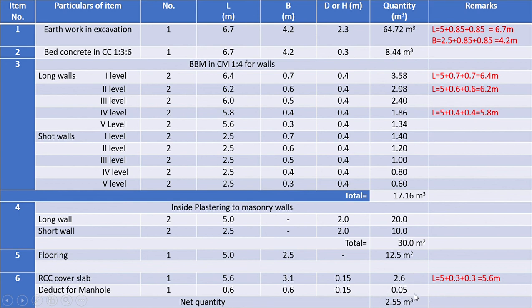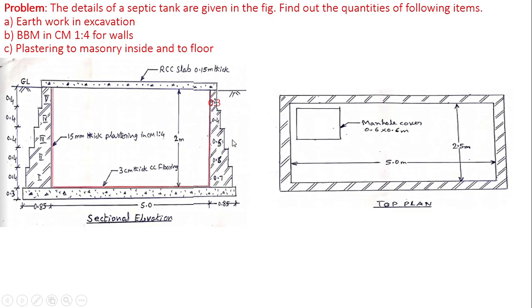If the rate per unit of these items are known, the cost of construction of septic tank can be calculated by using the abstract estimate table. This is the end of the estimate of septic tank. Regards and happy learning.